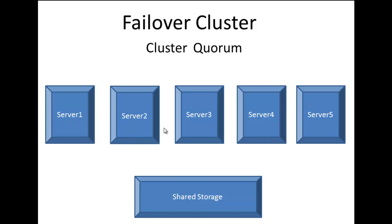The function also depends on the capacity of each node to host the cluster roles that get placed on that node. It also depends on the priority settings that are configured for the cluster roles. For example, a cluster that has five nodes can have quorum after two nodes fail. However, each remaining node would serve clients only if it had enough capacity to support the clustered roles that failed over to it, and if the role settings prioritized the most important workloads.